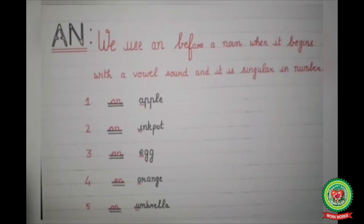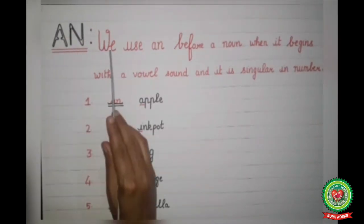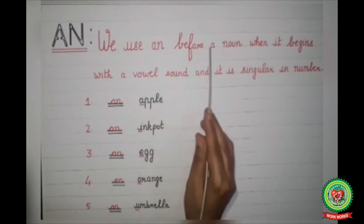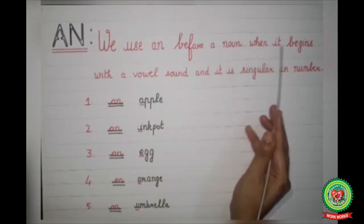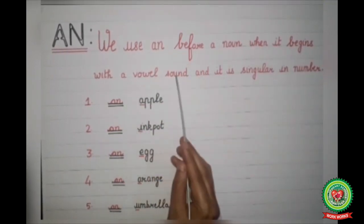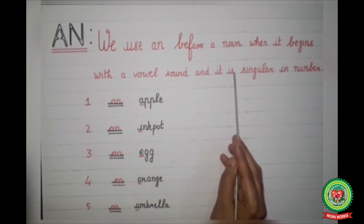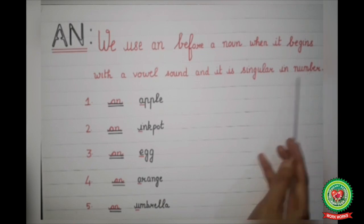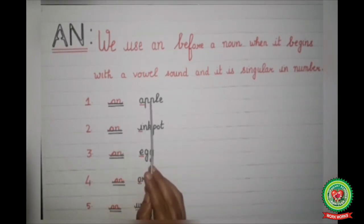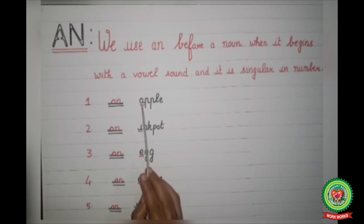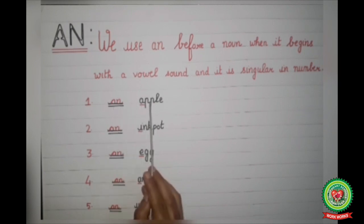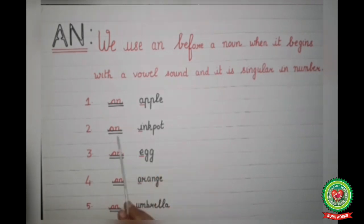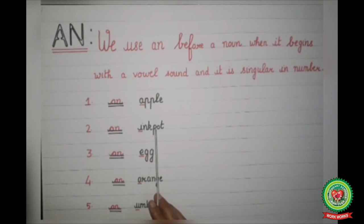Now I will tell you the use of 'an'. We use 'an' before a noun when it begins with a vowel sound and it is singular in number. Let us discuss some examples: 'an apple' — the word 'apple' starts with the vowel A, so we have written 'an apple'. Next example: 'an ink pot' — the word 'ink pot' starts with the vowel I, so we have written 'an ink pot'.